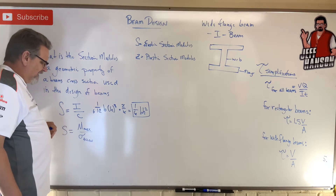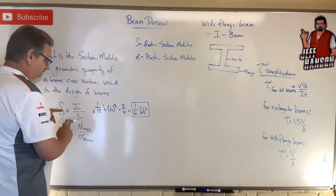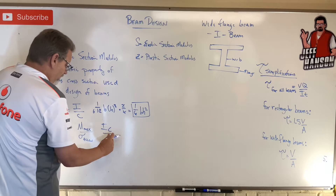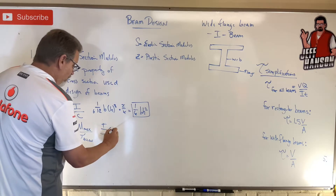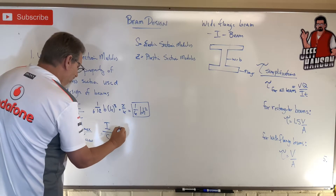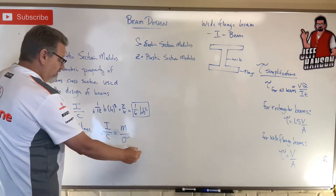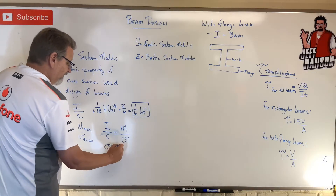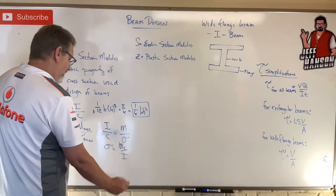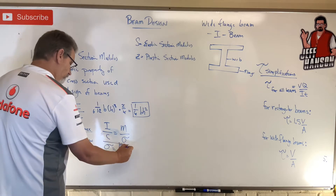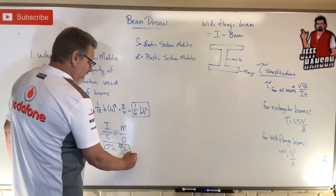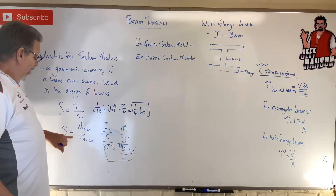Now watch this: S = I/c, and I/c = M/sigma. Move sigma to the other side and you get sigma = Mc/I — that's our old beam bending equation, the flexure formula. So the section modulus connects directly back to that.